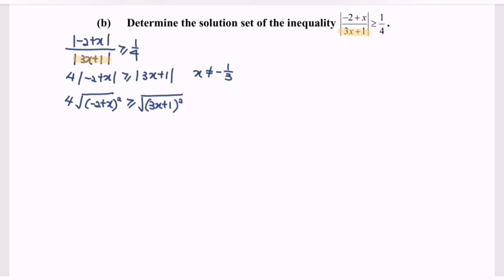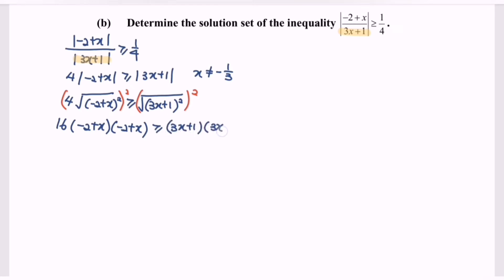My strategy would be squaring both sides. Then we have 16 multiplied with (-2 + x) squared greater than or equal to (3x + 1) multiplied with (3x + 1). Kindly expand the situation. So we will have 16 multiplied with (4 minus 4x plus x squared) greater than or equal to (9x squared plus 6x plus 1).